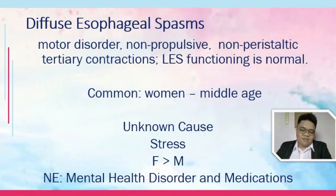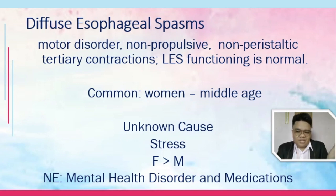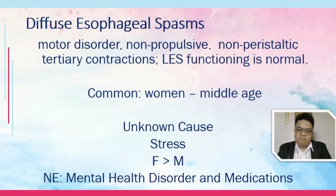Now, your diffuse esophageal spasms. They are discussed simultaneously because they have similarities and differences. Diffuse esophageal spasm is characterized by a motor disorder wherein there is non-propulsive, non-peristaltic tertiary contractions. There is movement and contractions, but they are non-propulsive and non-peristaltic. The LES is functioning normally. This is common among women and middle age. The cause is idiopathic, not fully known, but is attributed to stress.